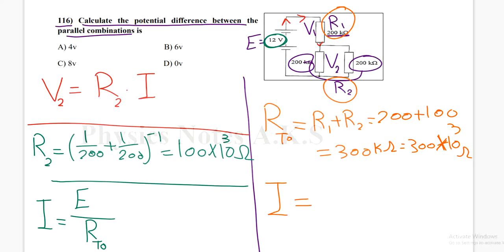It's going to be E which is 12 over R total, I have 300 times 10 to the power 3, so I got the current which equals 4 multiple 10 to the power negative 5 ampere. This is the electric current. Why did I find the electric current? Just to substitute it in here.